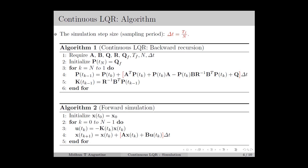In the LQR algorithm, we start with the terminal cost matrix p(tn), which is set as the terminal weighting matrix Q_f. Then we go backwards in time, and during each time instant we compute the cost matrix using the discretized version of the RDE, computing the cost matrix at time tk-1 using the cost matrix at the next instant p(tk). Using the cost matrix at tk-1, we compute the feedback gain at tk-1. We repeat this for k equal to n down to 1, which gives the feedback gains for each time instant, and these we store in a matrix.